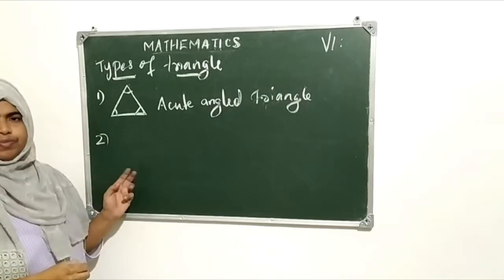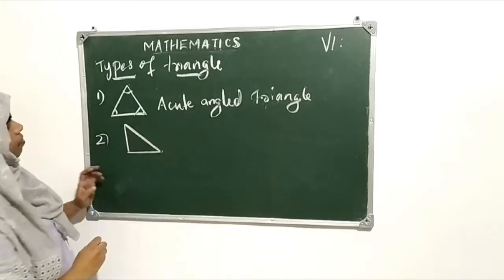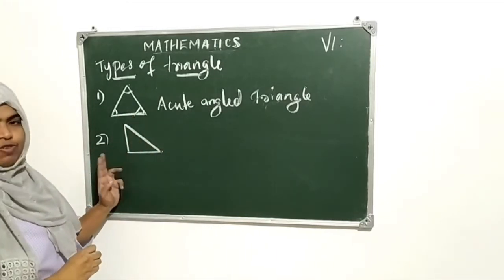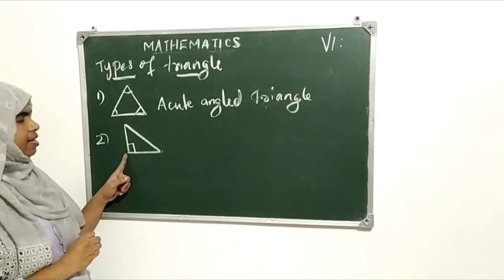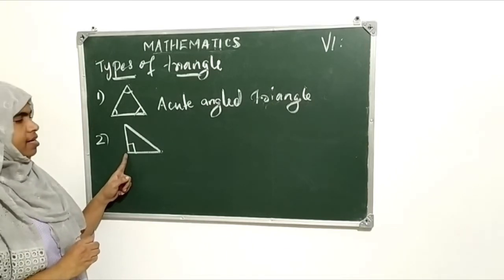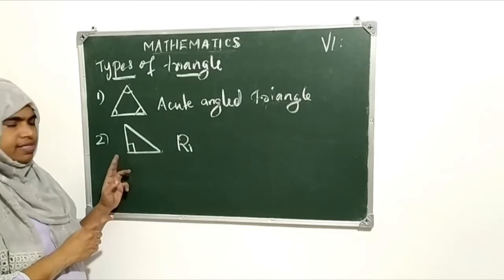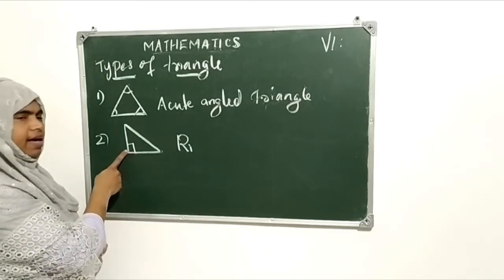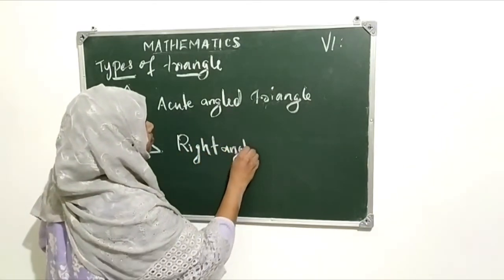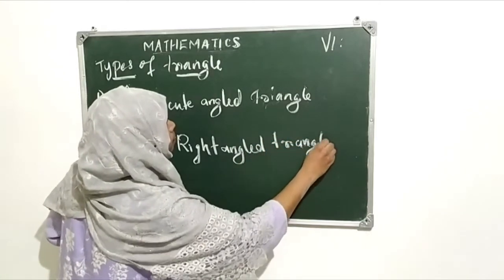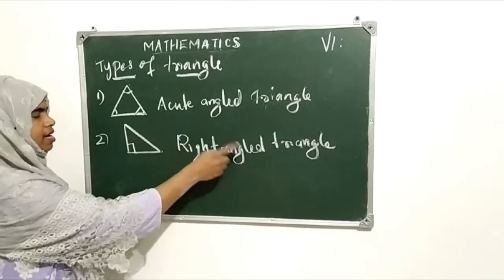Second type: looking at this, we can understand it is a right angled triangle. One angle is 90 degrees — that means one angle is a right angle, so this is called a right angled triangle.